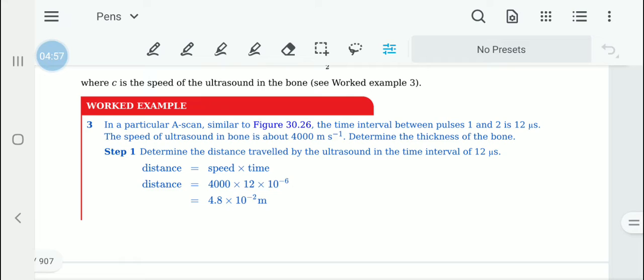This is really easy. Do not think too much about this stuff, just try to take the basic stuff. In a particular A scan, the time interval between pulse 1 and 2 is 12 microseconds. The speed of ultrasound in bone is about 4000 meters per second. Determine the thickness of the bone.